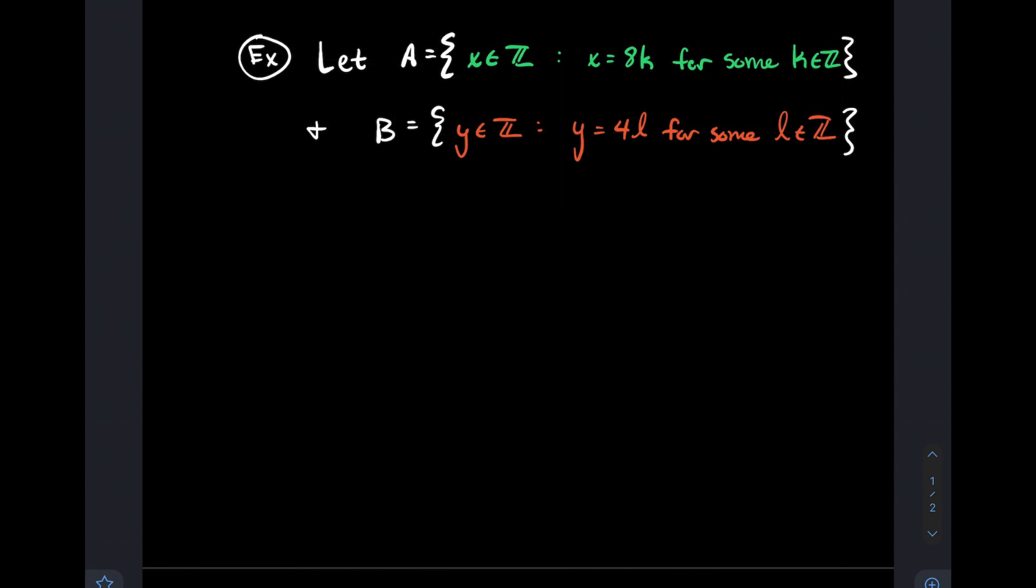I want to prove that A is a subset of B. Just trying to show formally that all the multiples of eight are in fact multiples of four as well. Not hard to believe.